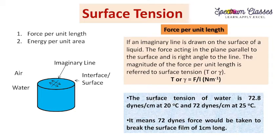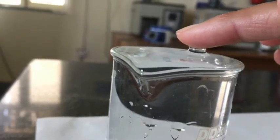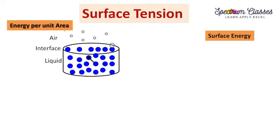Secondly, this value can also be interpreted as: 72 dynes of force would be needed to break the surface film of one centimeter length, as shown in the example. In other terms, energy per unit area — also known as surface energy — is the second way to explain surface tension.